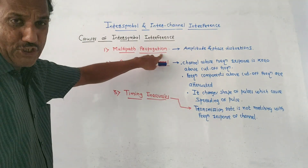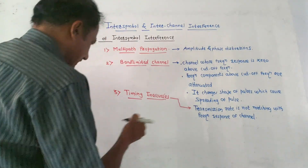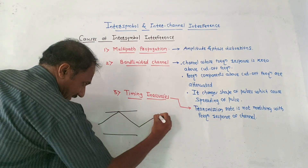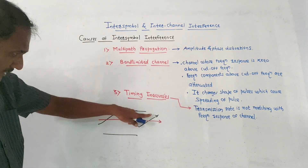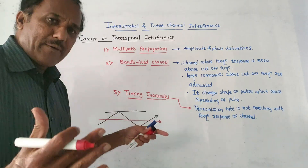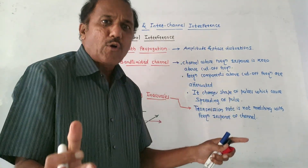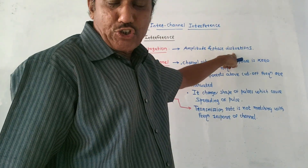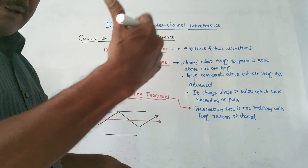The first cause is multipath propagation. As the name indicates, different components of the incoming signal travel through different paths. For example, one component travels directly from transmitter to receiver, while a second component may travel a longer path. These two components do not travel the same distance, so there is some delay. As a result, all components do not reach the receiver at the same time, causing dispersion of the pulse. This produces amplitude and phase distortions and is a reason for ISI.